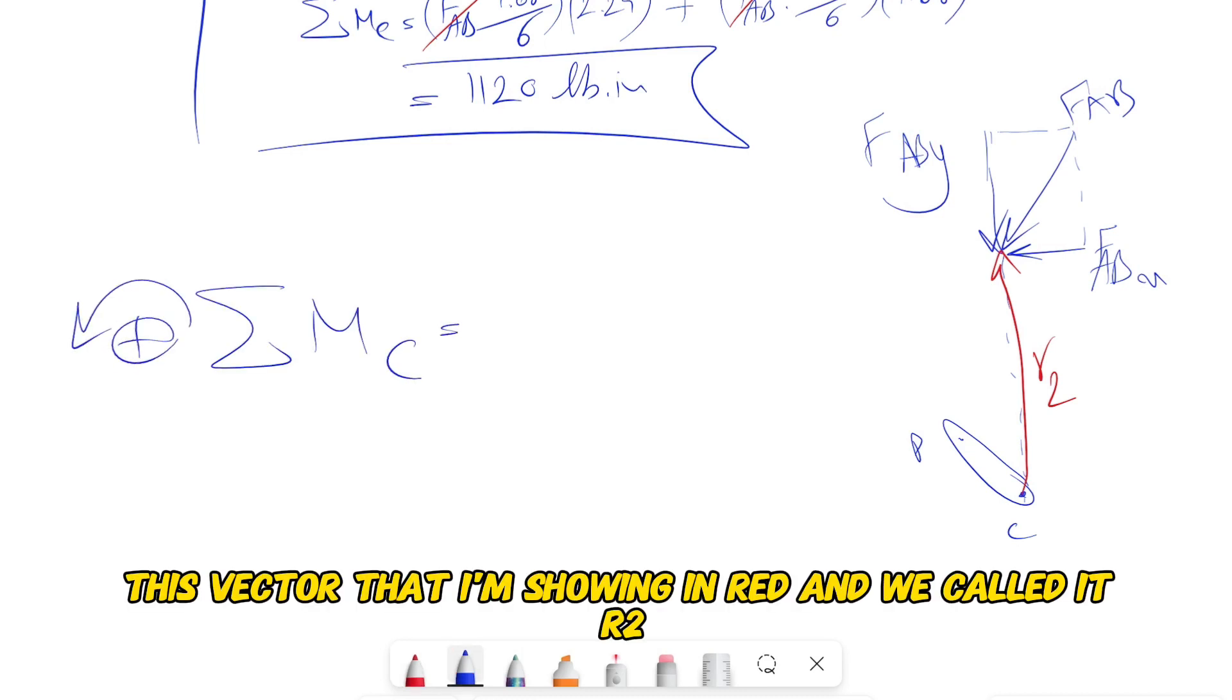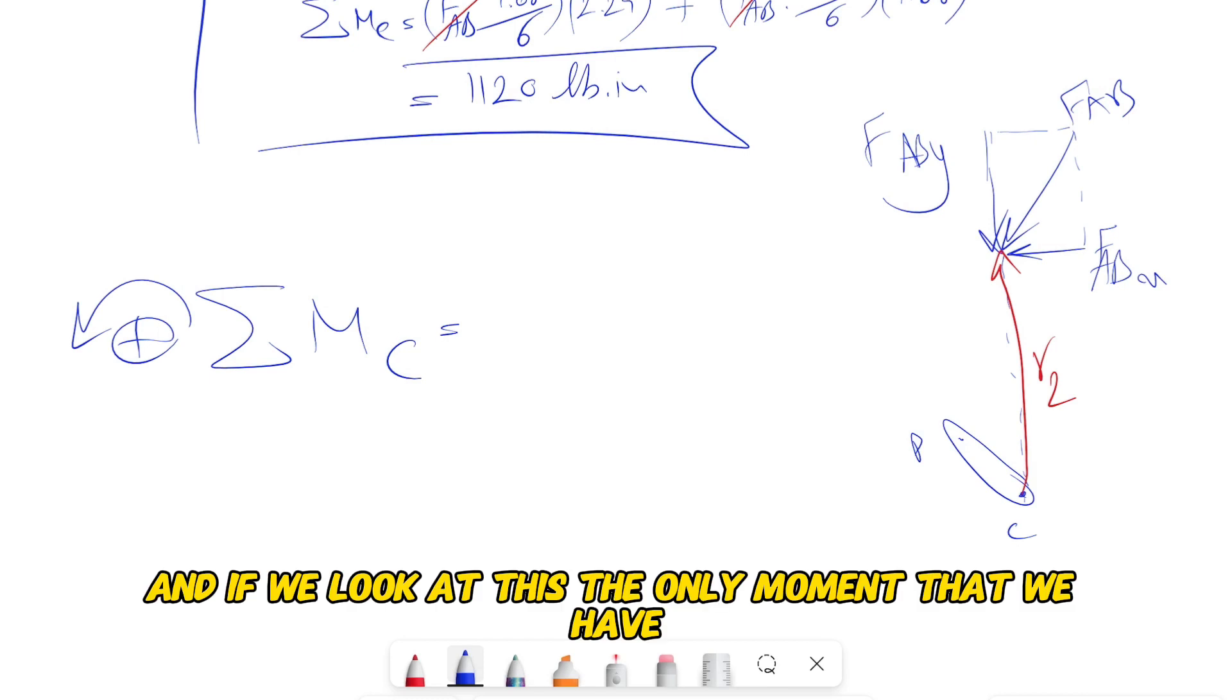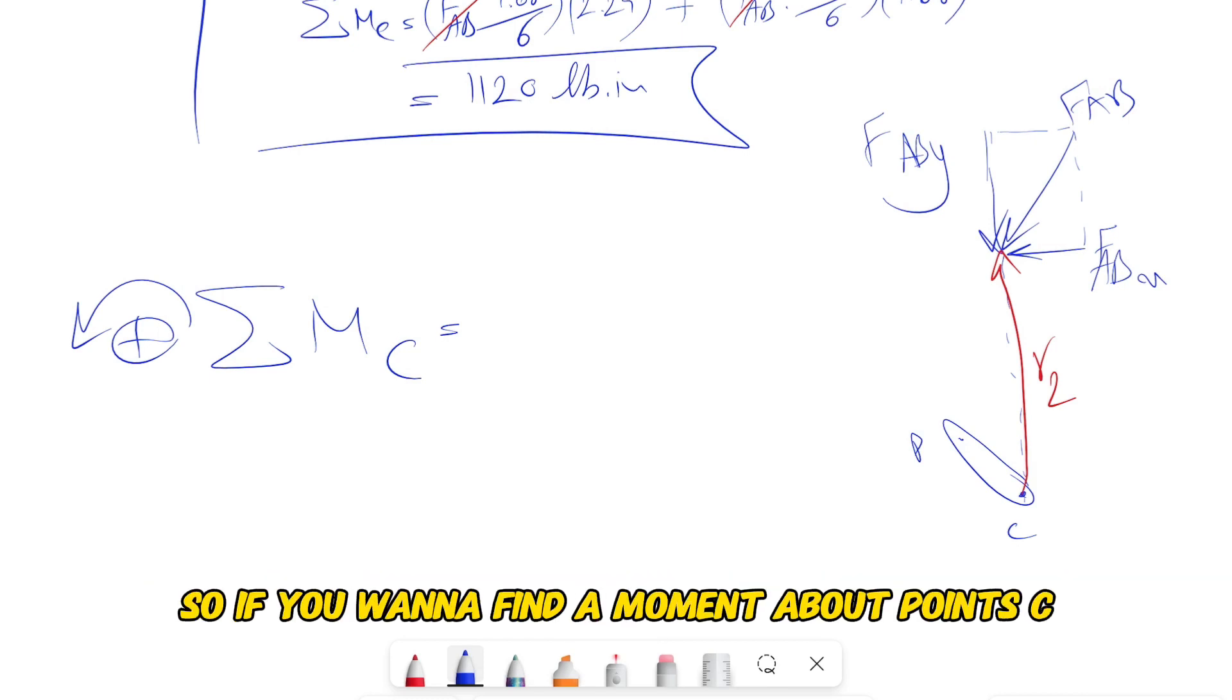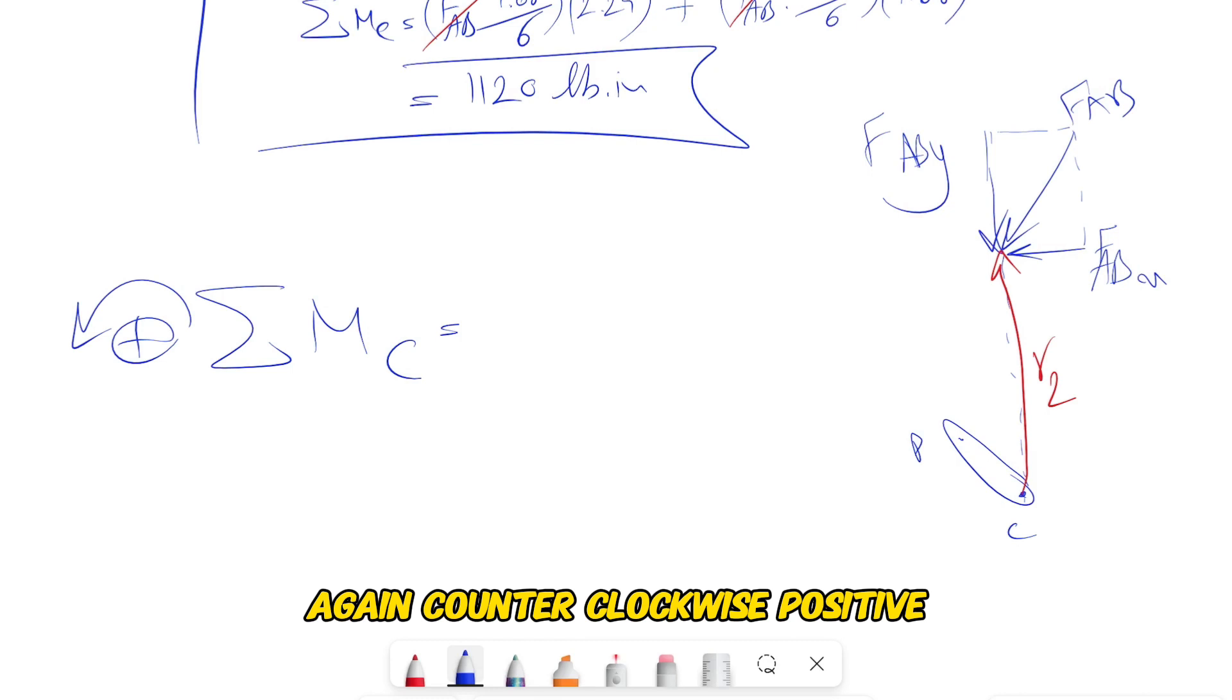So if we look at here, our r would be this vector that I'm showing in red, and we called it r2. If we look at this, the only moment that we have - so if you want to find the moment about point C, again counterclockwise positive.